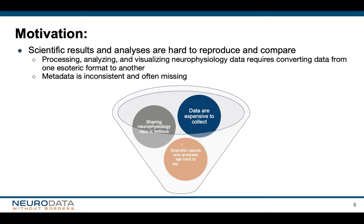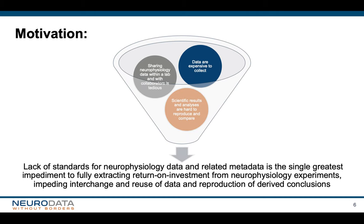A lot of the metadata is often missing or stored in ad hoc ways. Finally, the scientific results and analysis are hard to reproduce and compare. Processing, analyzing, and visualizing neurophysiology data requires converting the data from one esoteric format to another, while important metadata is often inconsistent or missing completely. It's the combination of these and many other issues that ultimately makes the lack of data standards for neurophysiology data the single greatest impediment to fully extracting return on investment from neurophysiology experiments, impeding interchange, reuse, and reproduction of derived conclusions. This is one of the main motivations why we develop NWB.